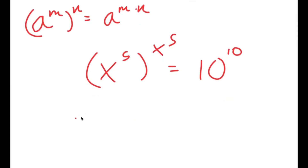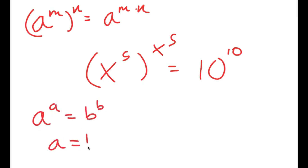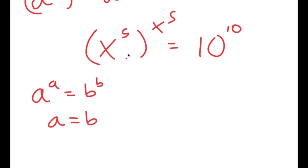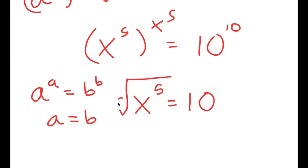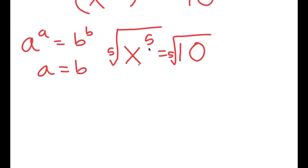My final property of exponents for this video is that if I have something in the form a to the power of a is equal to b to the power of b, this means that a is equal to b. So in this case, x to the power of 5 is equal to 10. To solve this, we take the fifth root on both sides: the fifth root of x to the power of 5 is x, so x is equal to the fifth root of 10.